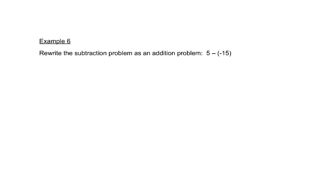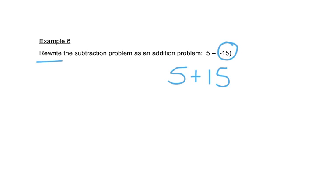In this problem, we can rewrite this: we copy the five, the minus becomes plus, and then the opposite of negative fifteen is a positive fifteen. So five minus a negative fifteen is really the same thing as five plus fifteen. This problem doesn't want us to solve it, it just wants us to rewrite it.